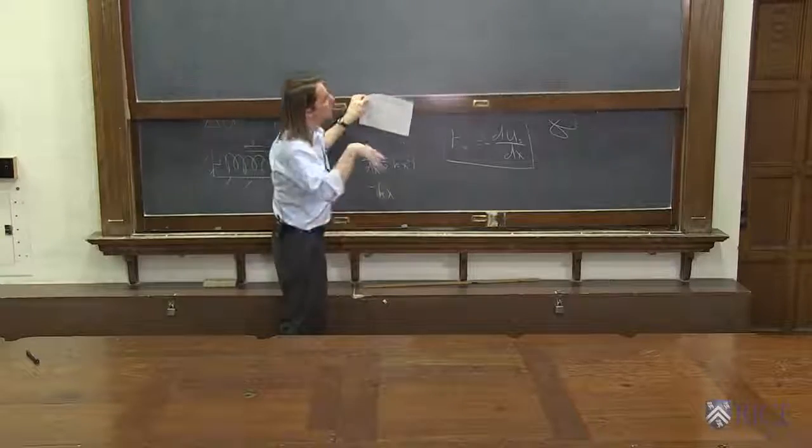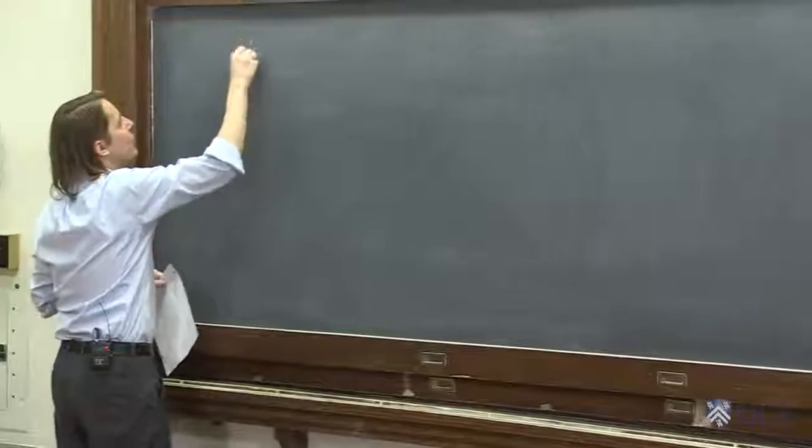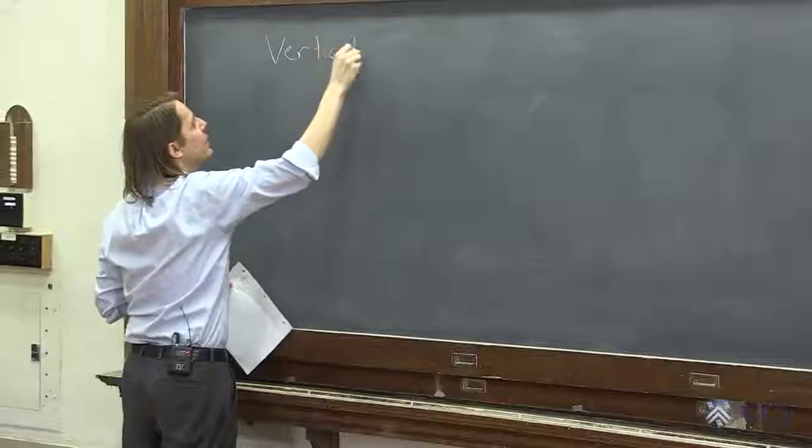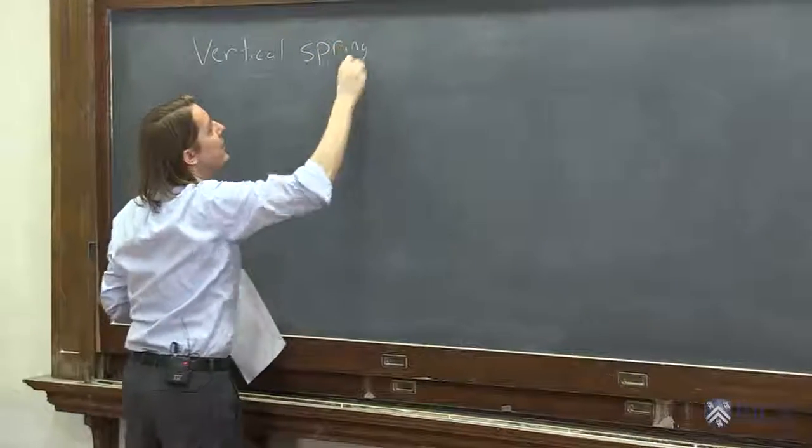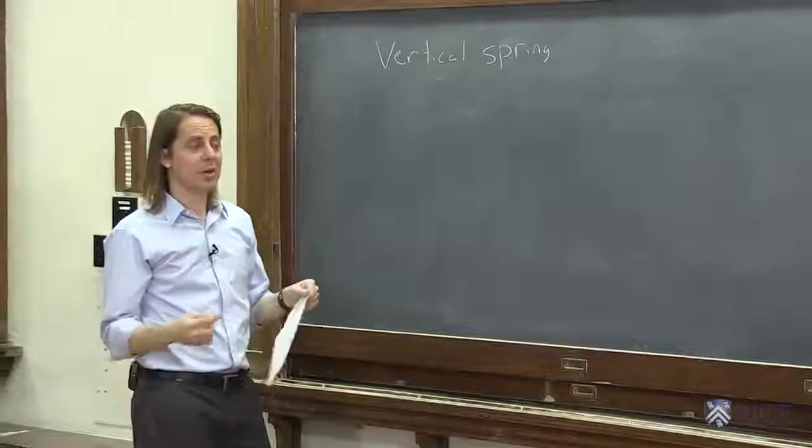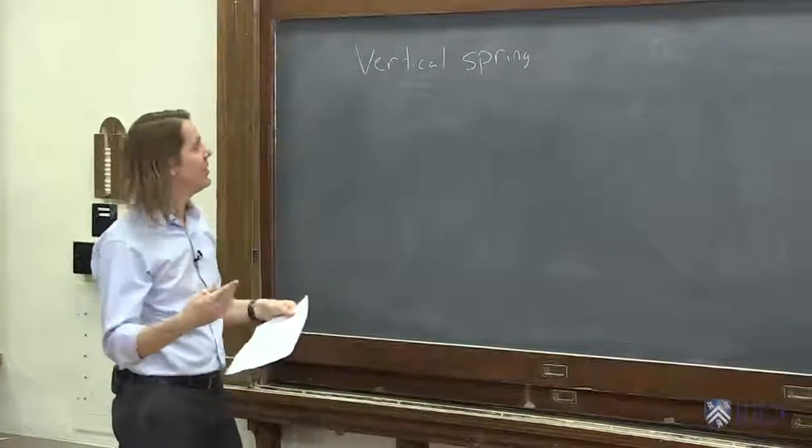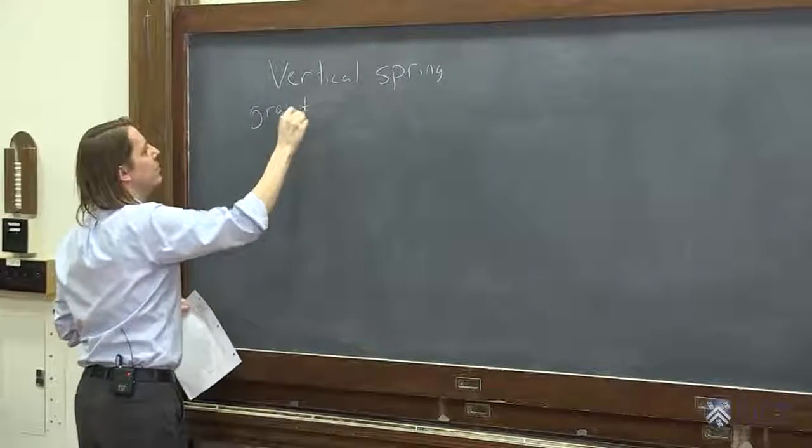An example could be, what if we wanted to think about a vertically hanging spring? Here's a vertical spring, where we've got to deal with both the spring potential energy and the gravitational potential energy at the same time. That can be done in terms of kinematics, but here's how you could do it in terms of energy.